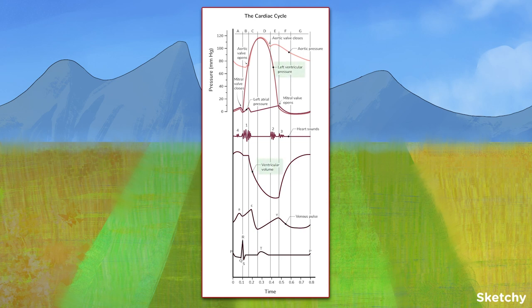This includes left ventricular pressure and volume, aortic pressure, left atrial pressure, the venous pulse, and the timing of the heart sounds. With all that out of the way, let's dive in.